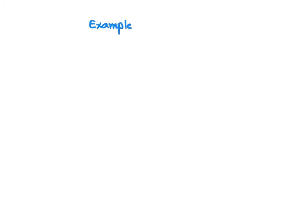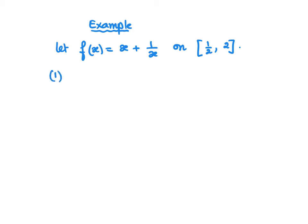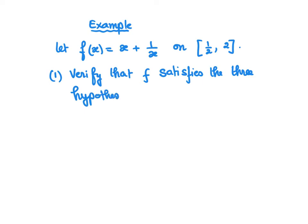Here is an example where we're going to use Rolle's theorem to find a point C where the derivative of a function is equal to zero. In this example, we let F be the function x plus one over x on the interval [½, 2]. We're going to do two things: first, verify that this function F actually satisfies the three conditions — the three hypotheses — of Rolle's theorem.